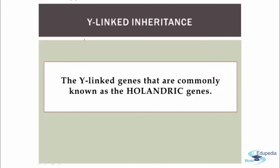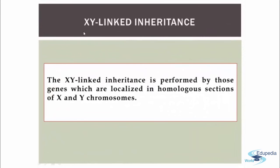Y linked inheritance: Y linked genes, commonly known as holandric genes, produce this type of inheritance. XY linked inheritance: XY linked inheritance is performed by those genes which are localized in the homologous sections of both X and Y chromosomes, and they produce XY linked inheritance.